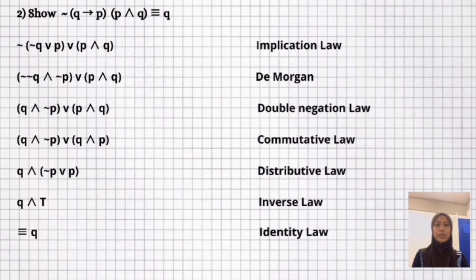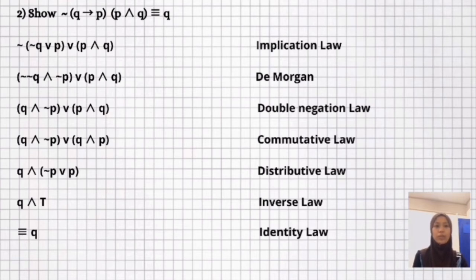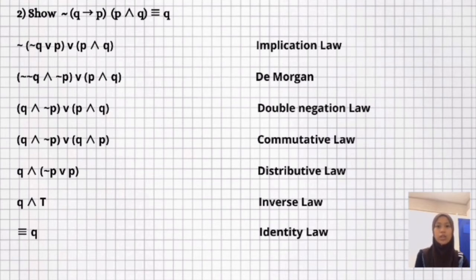Next, show that ¬(Q → P) ∧ (P ∧ Q) is equal to Q. First, use implication law: ¬(¬Q ∨ P) ∧ (P ∧ Q). Then De Morgan's law gives (¬¬Q ∧ ¬P) ∨ (P ∧ Q). Using double negation, ¬¬Q becomes Q, giving (Q ∧ ¬P) ∨ (Q ∧ P). Using distributive law: Q ∧ (¬P ∨ P). Inverse law changes ¬P ∨ P to T, and lastly identity law gives the final answer: Q.